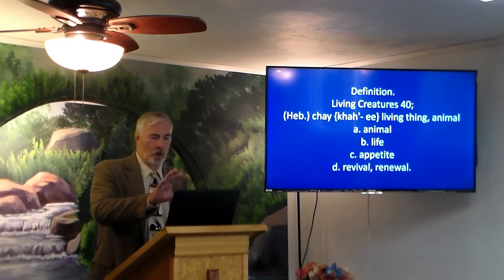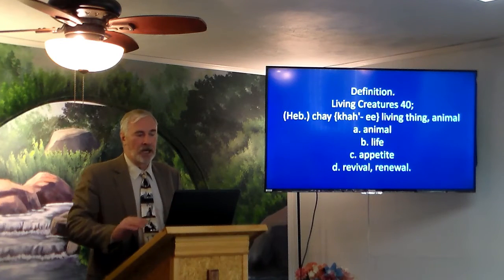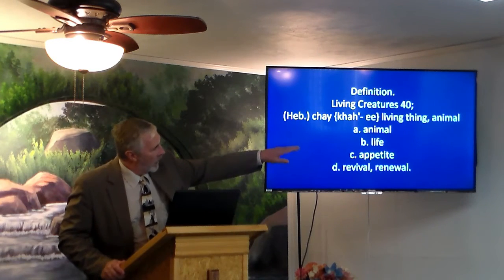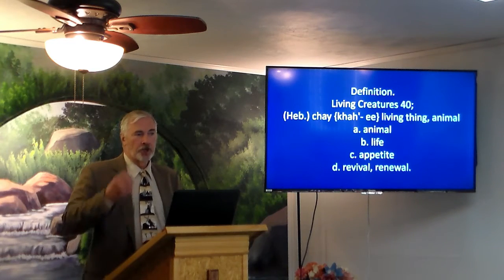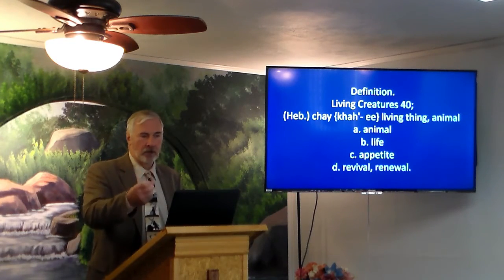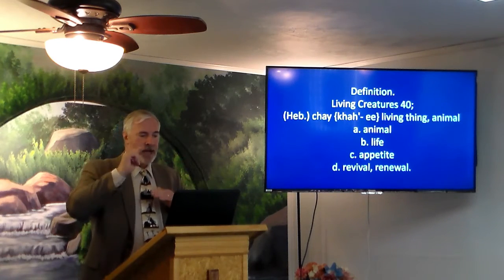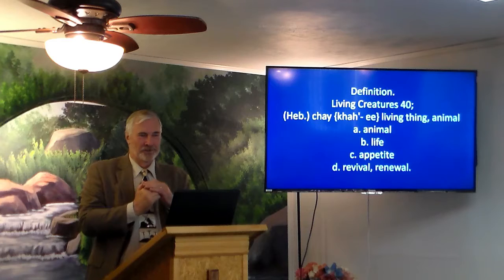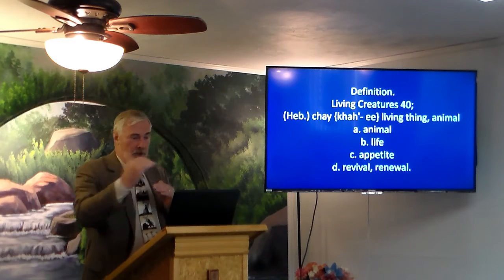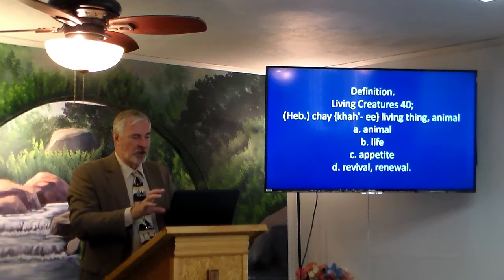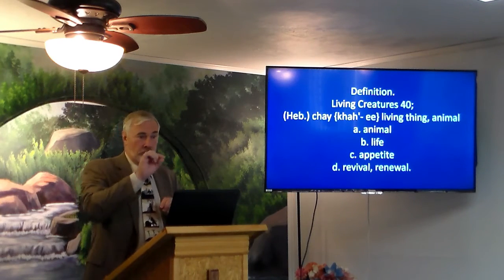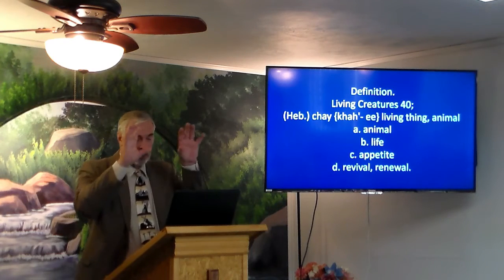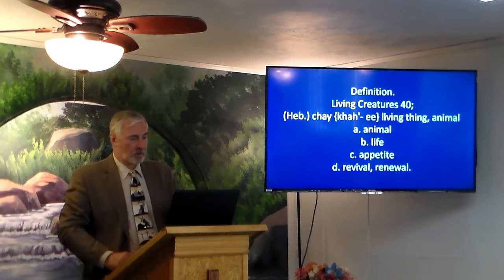From the Hebrew word chai, meaning a living thing or animal — with four uses: animal, life, appetite, revival, renewal — it's talking about something that's living. You have to separate it by context: is it talking about a heavenly living creature or an earthly living creature? In Revelation chapter 7, for example, you can see it's talking about a heavenly context.